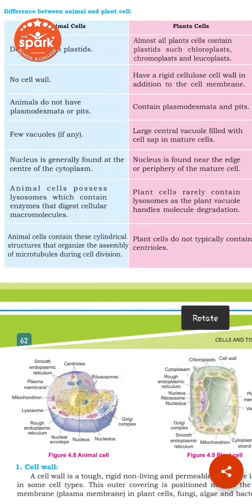Plant cells have a cell wall in addition to the cell membrane, which is the outer membrane. Animal cells do not contain a cell wall. Plant cells also contain plasmodesmata and pits, whereas animal cells do not contain plasmodesmata. In plant cells, the pits also contain plasmodesmata.